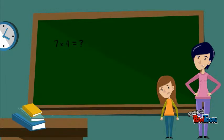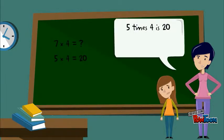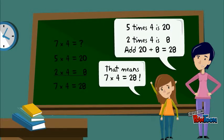5 times 4 is 20. 2 times 4 is 8. Add 20 and 8. That means 7 times 4 is 28.